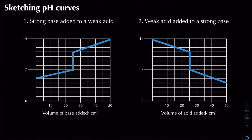For a strong base added to a weak acid: the vertical section shifts upward. The pH starts above 1 (weak acid) and, once the strong base is in excess, finishes above 12. The exact opposite applies for a weak acid added to a strong base. Remember, your x-axis always changes depending on what you're adding to what.